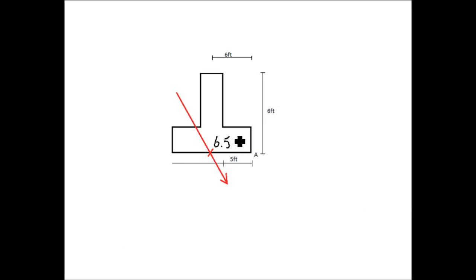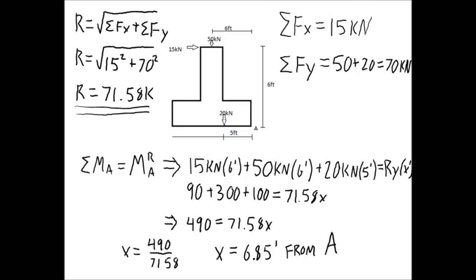In review, in order to find the resultant, you must first find the sum of all x and all y forces. Then, you must take the square root of the sum of all x forces squared plus the sum of all y forces squared, which will give you your resultant. Then, to find the location of the resultant, you must take summation of moments about A, which is equal to the moment of the resultant about A. Remember, when finding the location, you do not know the distance of the resultant from point A.